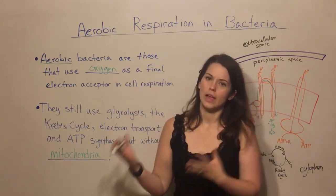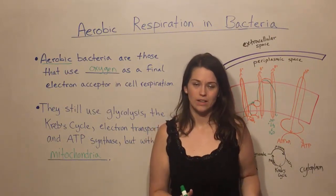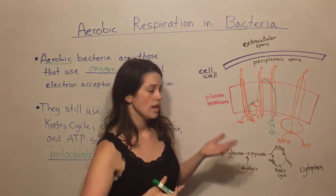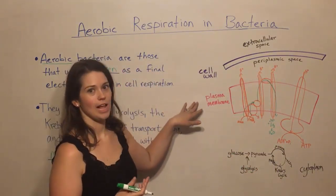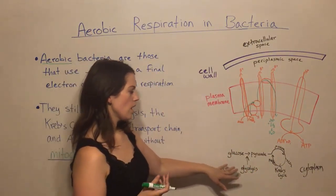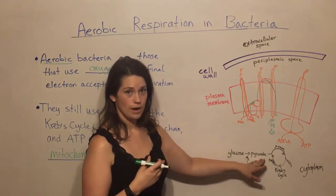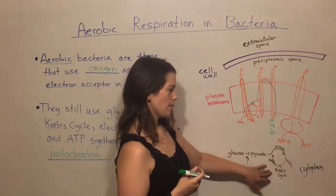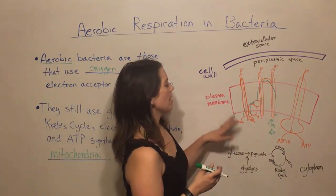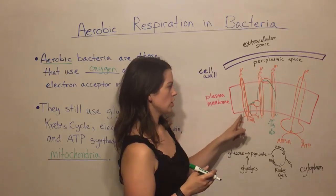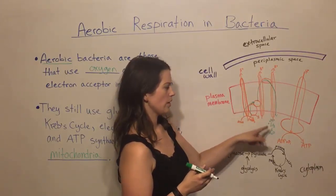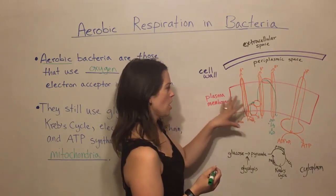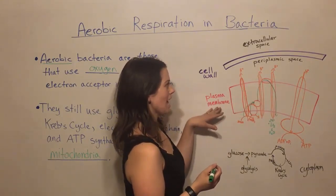But of course, bacteria are not eukaryotic cells — they're prokaryotic cells. They don't have membrane-bound organelles and they certainly don't have mitochondria. So what do they use? They actually just use their regular plasma membrane. Glycolysis, where glucose gets converted to pyruvate, still happens in the cytoplasm. The Krebs cycle is also happening in the cytoplasm. And then the electron transport chain — drawn here in orange with the electron transfers shown in green — and oxygen, the final electron acceptor, are all happening in the plasma membrane.